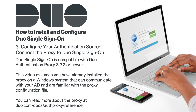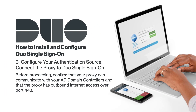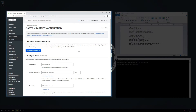You will need to install and configure an on-premises Duo Authentication Proxy to connect to Duo Single Sign-On. Duo Single Sign-On is compatible with Duo Authentication Proxy versions 3.2.2 or higher. For the sake of brevity, this video assumes that you have already installed the Authentication Proxy on a Windows system that can communicate with your AD and that you are familiar with the proxy configuration file. You can read about how to install and configure the proxy at duo.com/docs/authproxy-reference. It is recommended to use three proxies for high availability. Before proceeding, confirm that your proxy can communicate with your AD domain controllers and that the proxy has outbound internet access over port 443. For ease of setup, we recommend accessing the Duo Single Sign-On section of the admin panel from the system that your authentication proxy has been installed on.